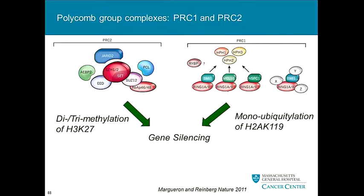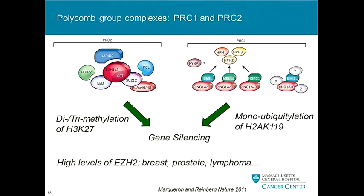Interestingly, if you hypermethylate lysine 27, you can transform cells in vitro. We're learning that in many cancers, EZH2 is actually upregulated and overexpressed — this includes prostate cancer, breast cancer, lymphoma, and even some sarcomas.